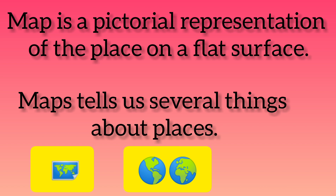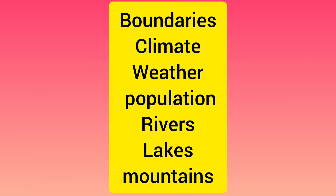Maps give us several types of information. We are going to get different types of information like boundaries, rivers, lakes, mountains, population, climate, weather, and so on. All these kinds of information we can get in the form of a map.